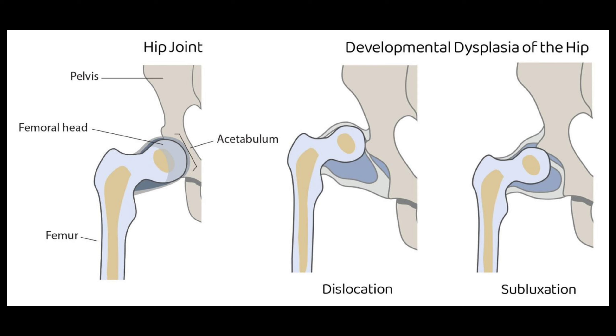To summarize: slipped upper femoral epiphysis affects males and occurs in the second decade of life, while developmental dysplasia of the hip mostly affects females with breech presentation and a family history.